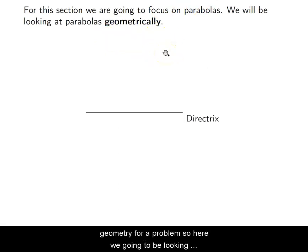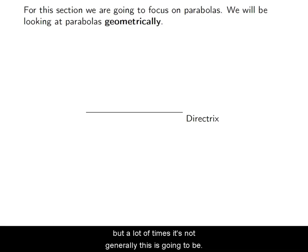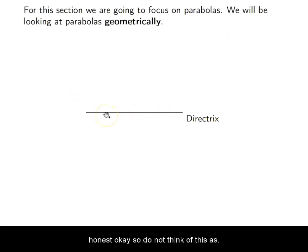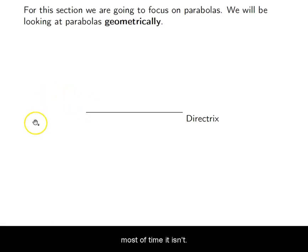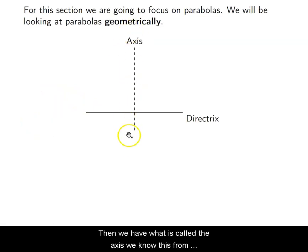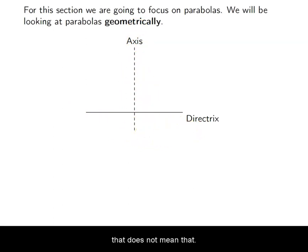We have a line called the directrix. For simplicity it could be the x-axis or y-axis, but a lot of times it's not. Do not think of this as the coordinate axis — sometimes it is, sometimes it isn't, but most of the time it isn't. Then we have what's called the axis — we know this from our study of quadratics as the axis of symmetry. This is not necessarily the y-axis either, even though the directrix and axis look like the x and y-axes because they're perpendicular.